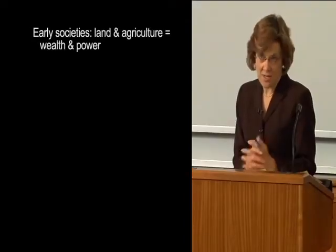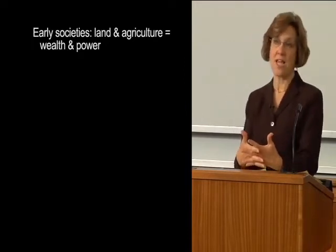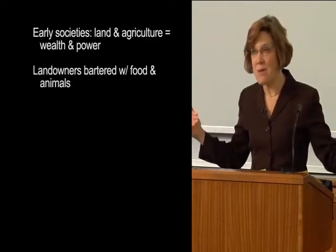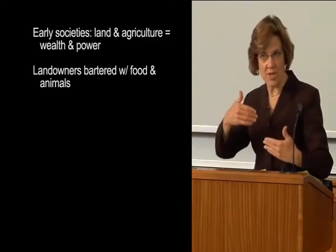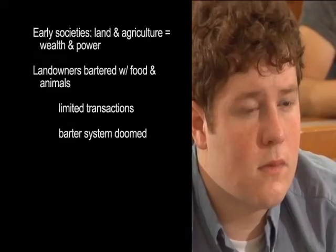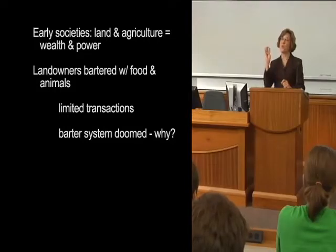In early societies, land and agriculture provided the main forms of wealth and power, because only landowners could grow large amounts of food and raise large amounts of animals, such as cattle and sheep. Although people could carry out limited business transactions by bartering animals and vegetables, the barter system was doomed to fail, as you'll see through the four enormous advantages of money I'm about to explain.